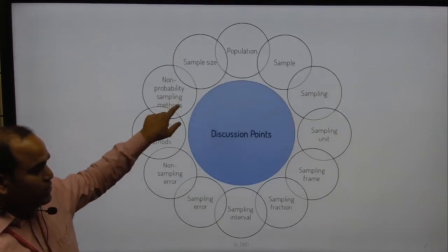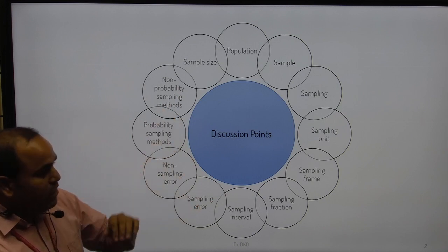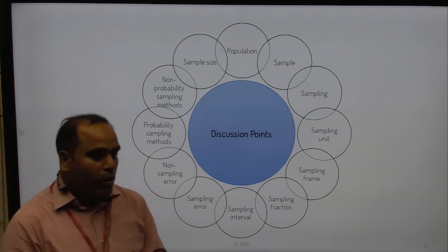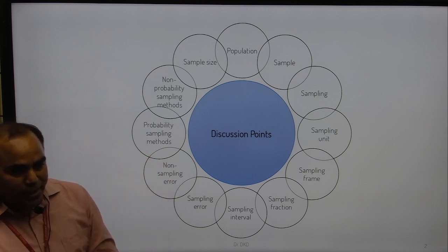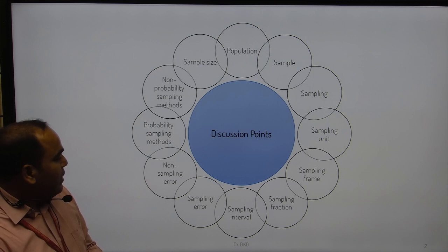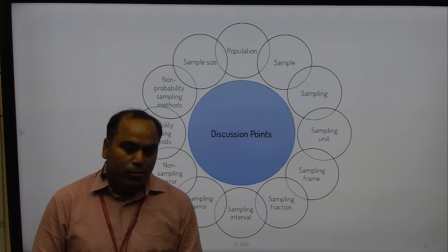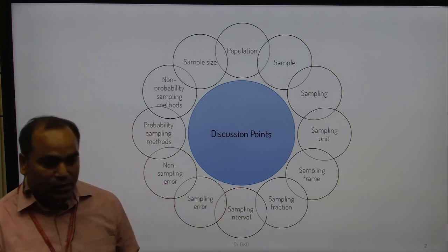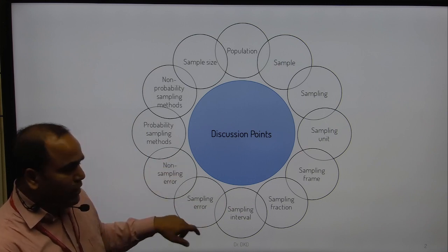The following points will be discussed in this lecture: we will start from population, then discuss sample, and then cover sampling mechanisms such as sampling unit, sampling frame, sampling fraction, interval, error, and non-sampling. Different kinds of probability and non-probability sampling methods will be discussed in subsequent classes, as it is not possible to complete everything in one class.